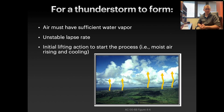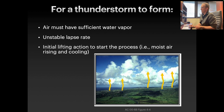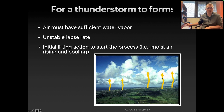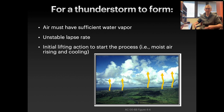For thunderstorms to start forming, we need an initial lifting action to start the process, which then drives vertical air currents. What might start as beautiful cumulus clouds on a nice summer's day can, if the lifting action continues and conditions become very unstable, grow into very large, very high cumulus clouds that produce thunderstorm clouds.